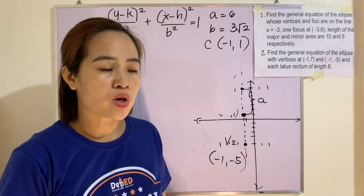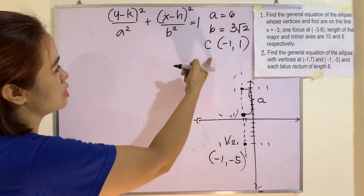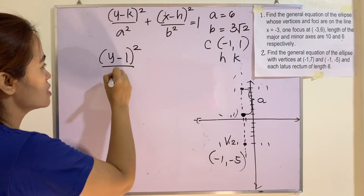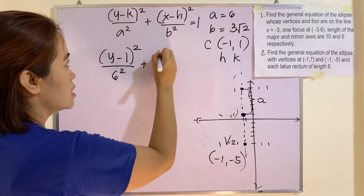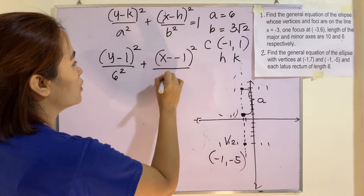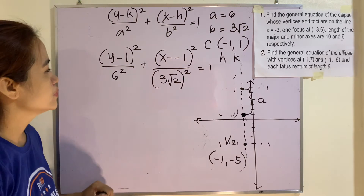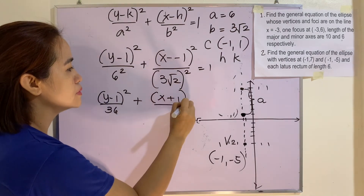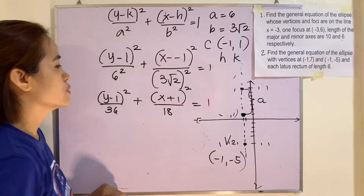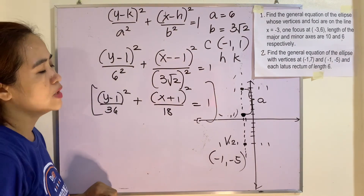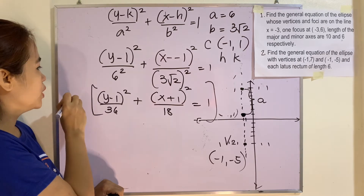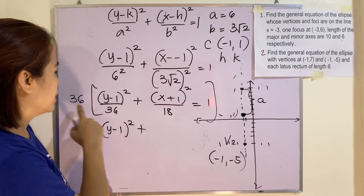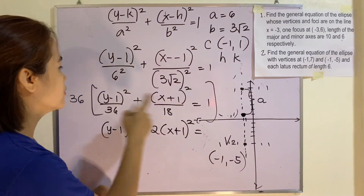To find the general equation, we have a = 6, b = 3√2, and center (-1, 1). So the standard form is: (y - 1)² / 36 + (x + 1)² / 18 = 1. Getting the LCD of 36 and 18, which is 36: (y - 1)² + 2(x + 1)² = 36.